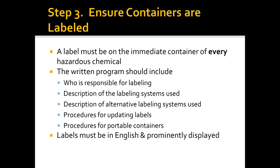Step three: labeling — probably one of the most confusing and highly cited areas. A label must be on the immediate container of every hazardous chemical. Your written program should include who will do labeling, what systems you'll use, how you'll update labels, procedures for portable containers, and how you handle labels for in-plant systems. Labels are only required in English, though multiple languages are permitted. Labels must be prominently displayed — ideally on the side of the container employees can actually read.